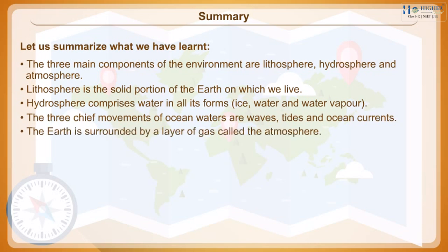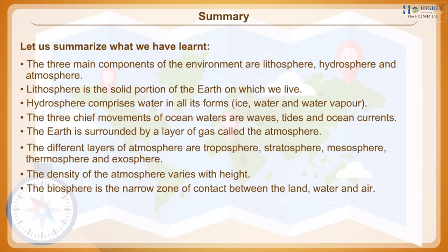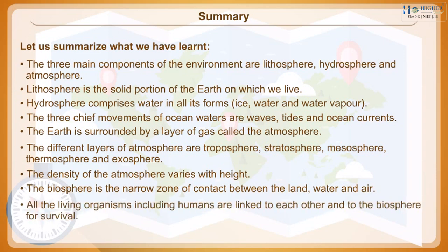The Earth is surrounded by a layer of gas called the atmosphere. The different layers of the atmosphere are troposphere, stratosphere, mesosphere, thermosphere and exosphere. The density of the atmosphere varies with height. The biosphere is the narrow zone of contact between land, water and air. All living organisms, including humans, are linked to each other and to the biosphere for survival.